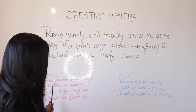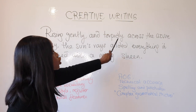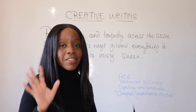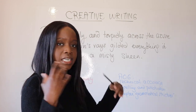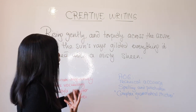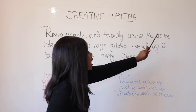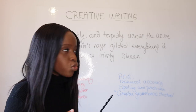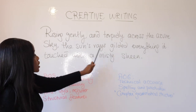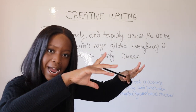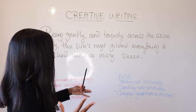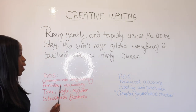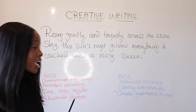When it comes to ambitious vocabulary, using words like "torpidly" — if you don't know what that means, watch my video on the 10 clever words for your GCSE writing. Other ambitious words include describing the sky using the vivid colour "azure," talking about how the sun's rays "gilded" everything — making it seem golden — and how they left a "misty sheen." So of course, you are hitting your ambitious vocabulary points in AO5.